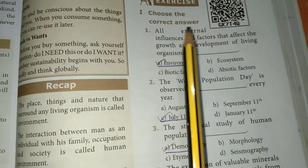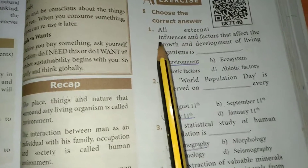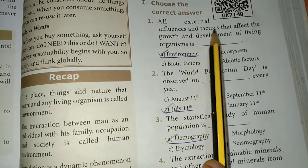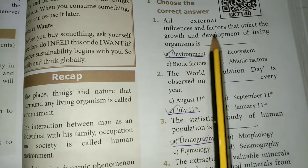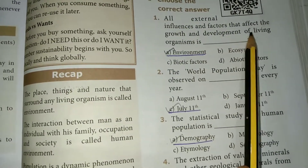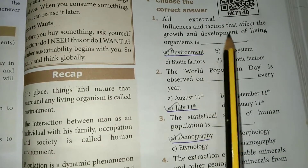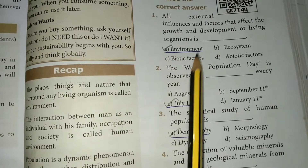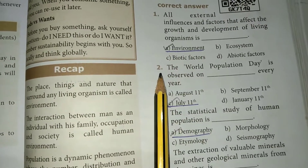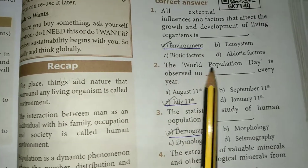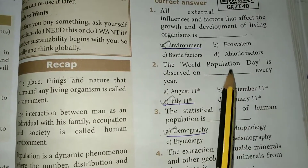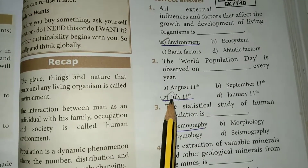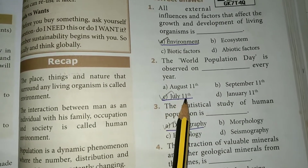Choose the correct answer. Question 1: All external influences and factors that affect the growth and development of living organisms. The answer is option A: Environment. Question 2: The World Population Day is observed every year. The answer is option C: July 11th.